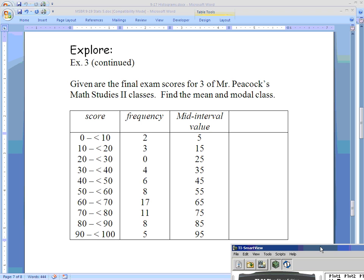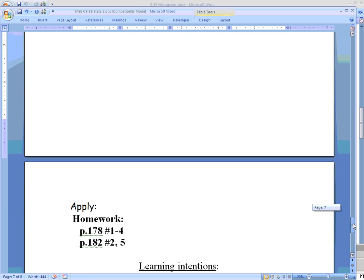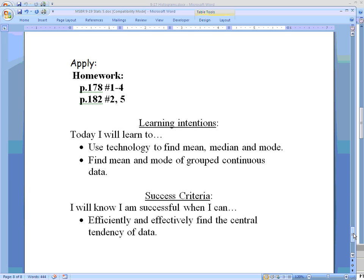The other part that we wanted to do, actually, we don't even need the calculator for. That was the modal class. And we're just looking for the class that has the most stuff in it. So we go to frequency, and that would be 17. Now it says modal class. So 65 here is not a class. That's a mid interval value or a midpoint value. So the class that we'd want to write down is from 60 up to 70. And that would be our modal class. All right. So make sure that you have your calculators next class. We'll be using technology to find mean, median, and mode. And we've got some homework problems on 178 and 182.